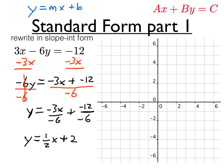So here we have y equals 1 half x plus 2. Now we have a slope of 1 half and a y-intercept of 0, 2.